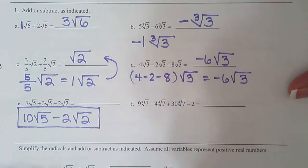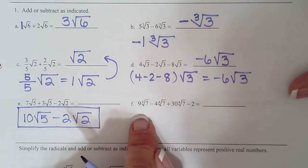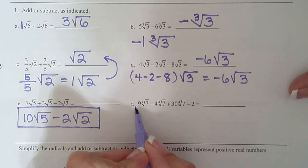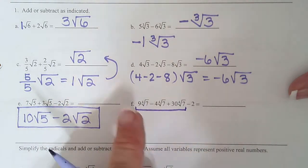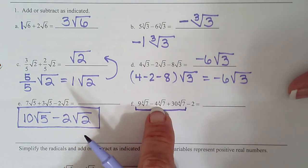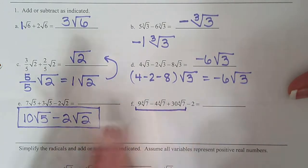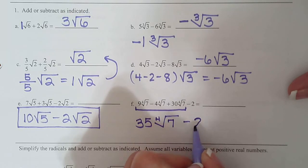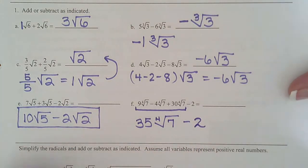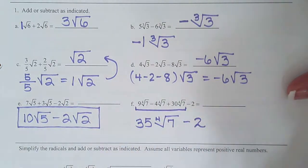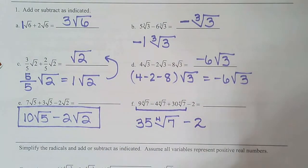So now look at the next one we have. Fourth root 7, fourth root 7, fourth root 7. So we have three like terms there, right? So now go down the line and look at the coefficients. 9 minus 4 is 5, 5 plus 30 would be 35, fourth root 7, minus 2. So 9 minus 4 is 5, 5 plus 30 is 35, tack on the radical, minus 2.